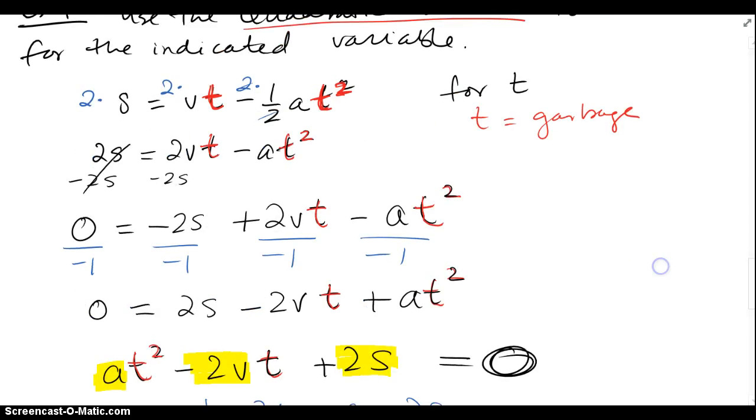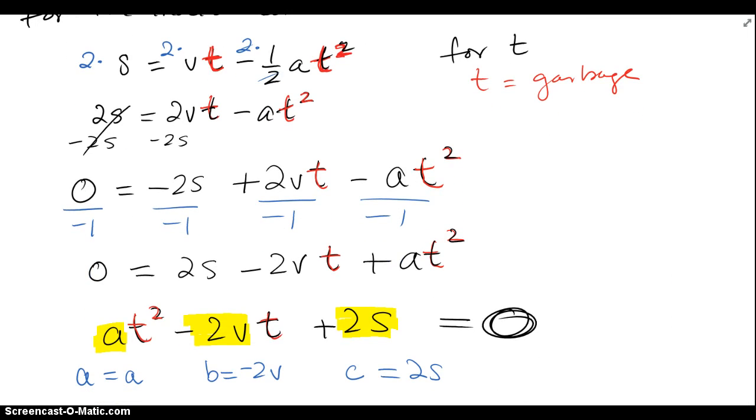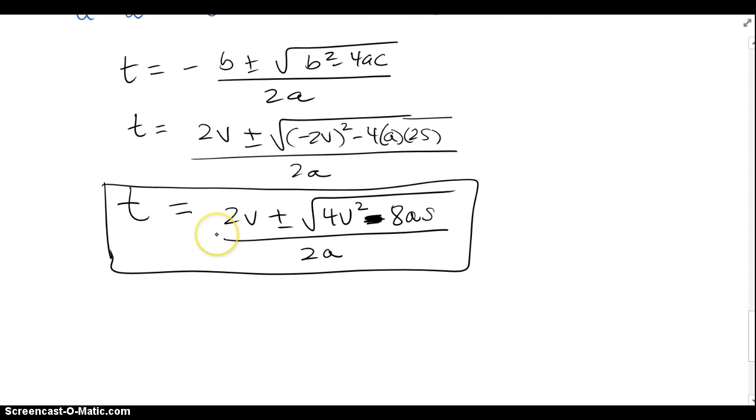So what we went through was, take this guy, simplify it, do whatever it takes to put it in standard form, like ax squared plus bx plus c, pull out our a, b, and c, and then get the t all by itself.